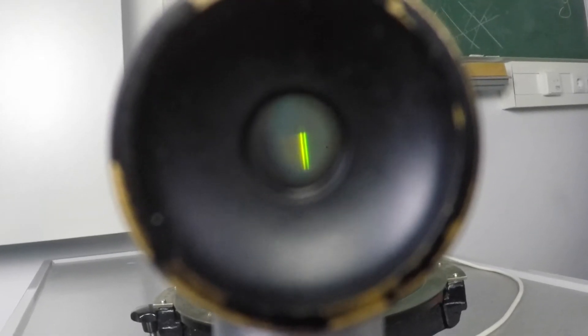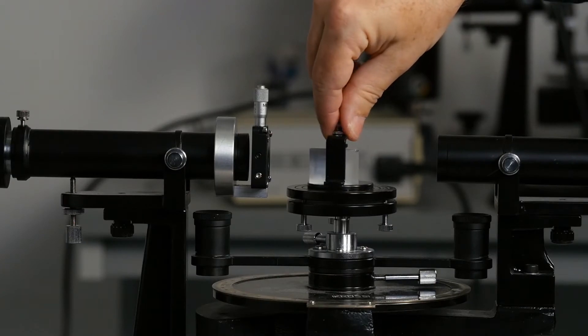Then the prism is placed on the prism table, which is adjusted with the leveling screws. Now bring the prism into the beam so that it is illuminated.